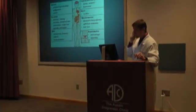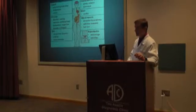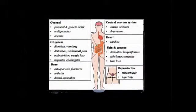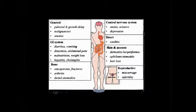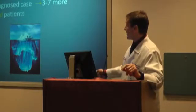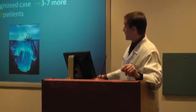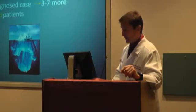Celiac disease isn't just a disease of the gastrointestinal tract. Numerous organ systems can be involved. In children, you have to worry about growth delays or developmental delays. There's concern about malignancies, anemia, gastrointestinal symptoms, bone problems such as osteoporosis and fractures, problems with your central nervous system, and problems with the skin as well as reproduction. We're only seeing the tip of the iceberg — for every case we know about, there are probably three to seven more undiagnosed.